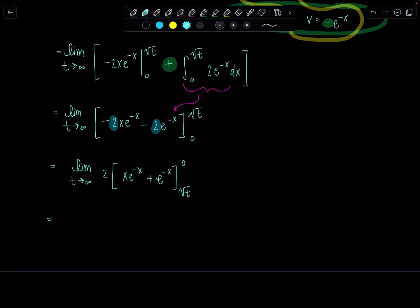Now let's evaluate at 0 and then square root of t. We have 2 times 0 times e to the 0 plus e to the 0 minus the lower limit, square root of t, e to the negative square root of t plus e to the negative square root of t. Boom. How are we doing?